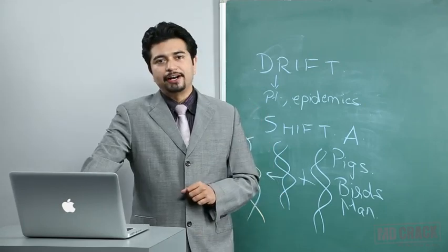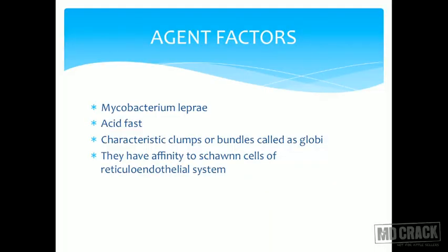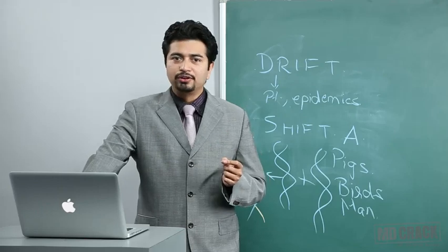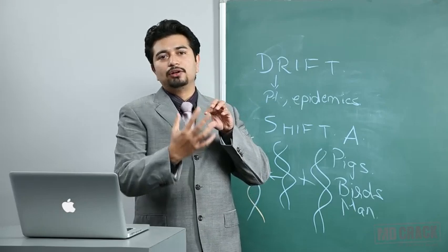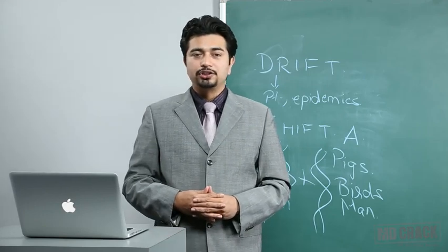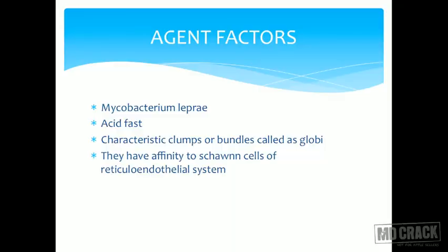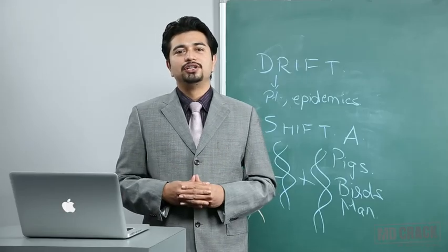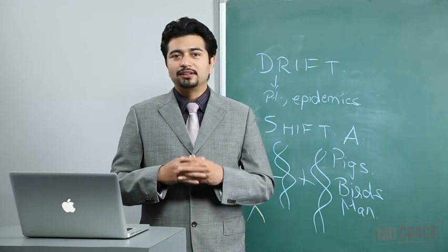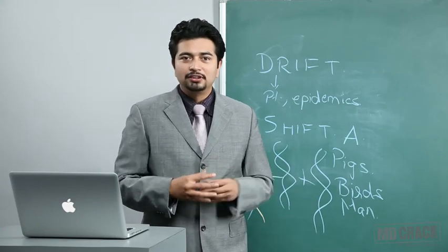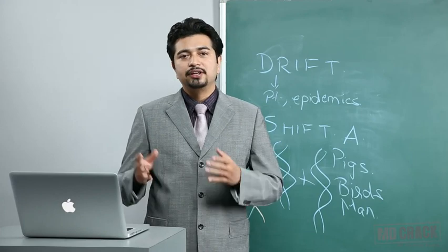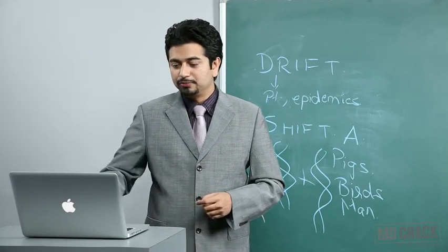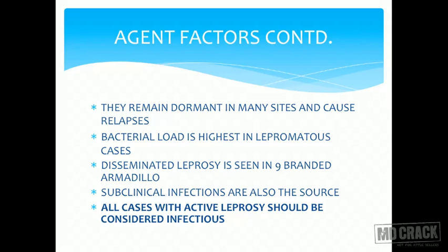Mycobacterium leprae is acid-fast like Mycobacterium tuberculosis. It forms characteristic clumps or bundles called globi, which look like a pack of cigarettes under the microscope. It has affinity to Schwann cells — the cells that provide insulation to axons. Mycobacterium leprae is attracted toward Schwann cells, disrupts them, disrupts conduction, and therefore causes neurological problems.